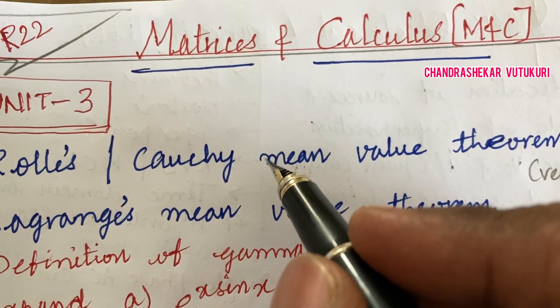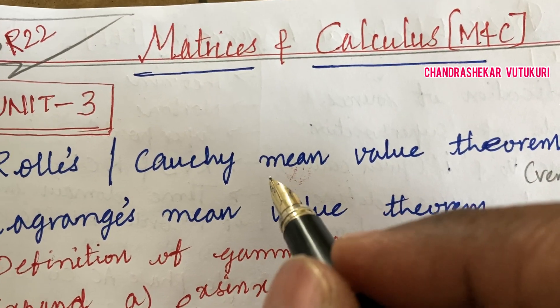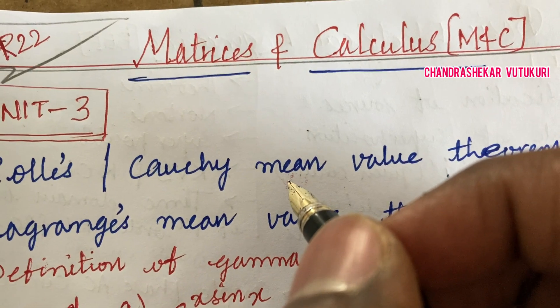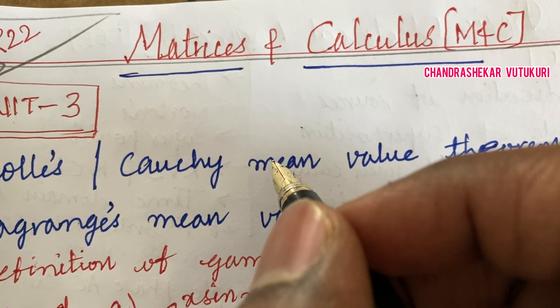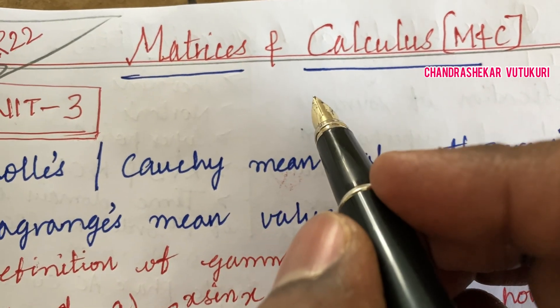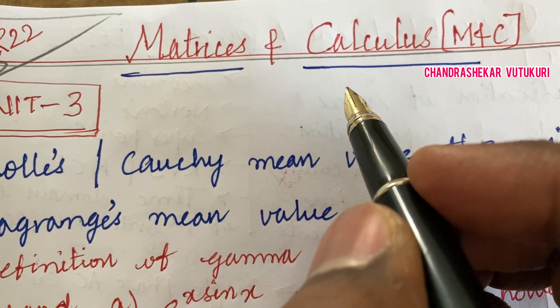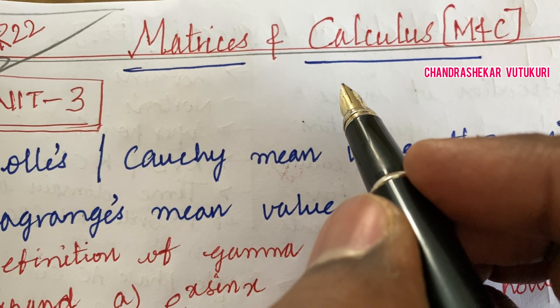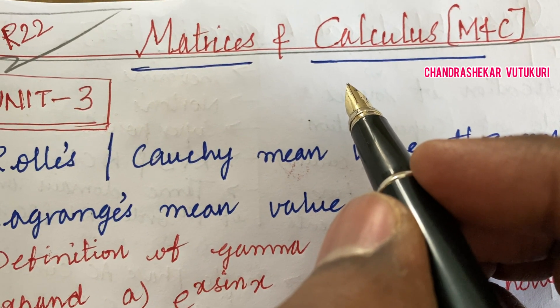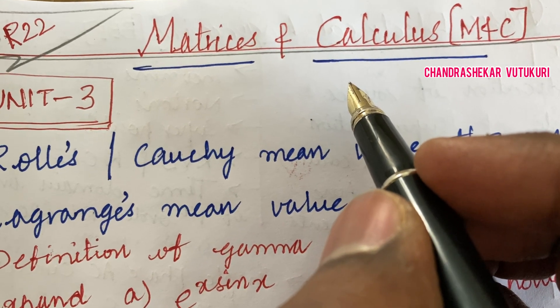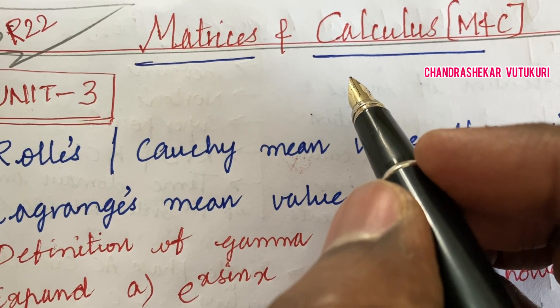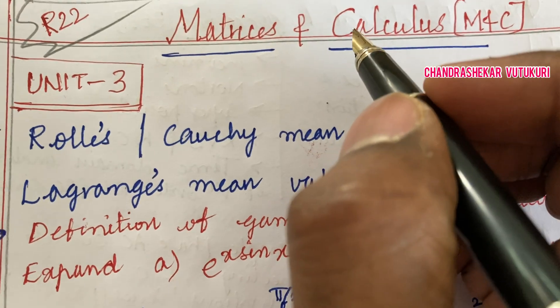Welcome back students. Hope you all have started your preparations for your external end examination. For R22 regulation, the third unit and fourth unit important questions for the course Matrices and Calculus are covered in this video. A video on Unit 1, 2, and Unit 5 is already posted. If you haven't gone through it, please check the playlist in my channel.